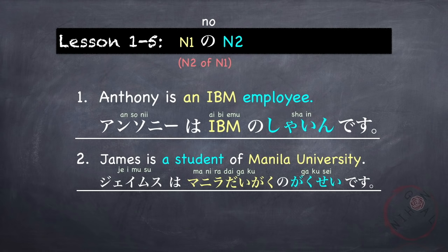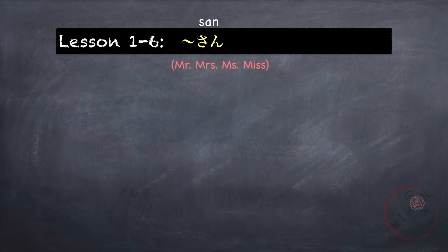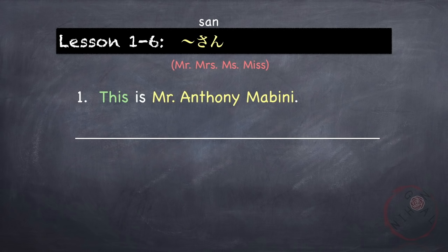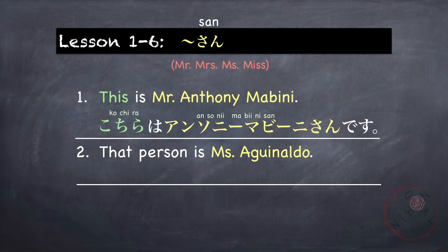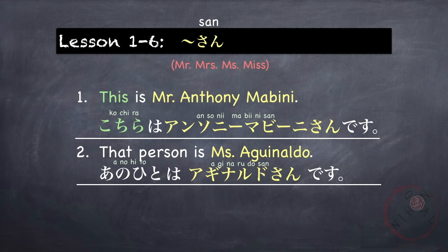Lastly, the word san is used to show respect. It is the equivalent of honorific titles such as Mr., Mrs., or Miss in English. For example, 'This is Mr. Anthony Mabini': Kochira wa Anthony Mabini san desu. This is an example of introducing someone to another person. Kochira is the polite way of saying 'this person.' Another example: 'That person is Ms. Aguinaldo' — Ano hito wa Aguinaldo san desu. Whether female or male — Mr., Mrs., or Miss — they're all the same: san.